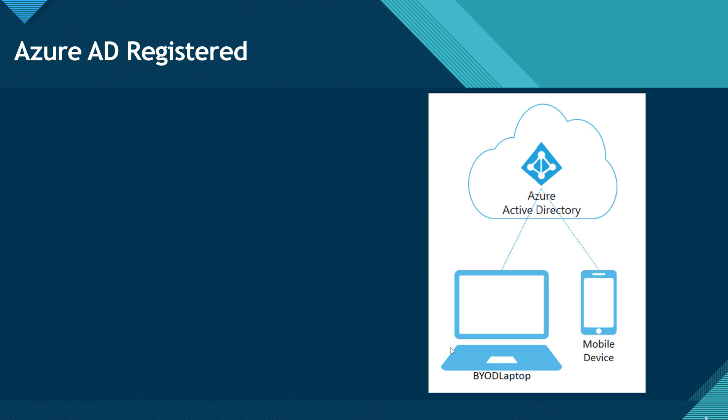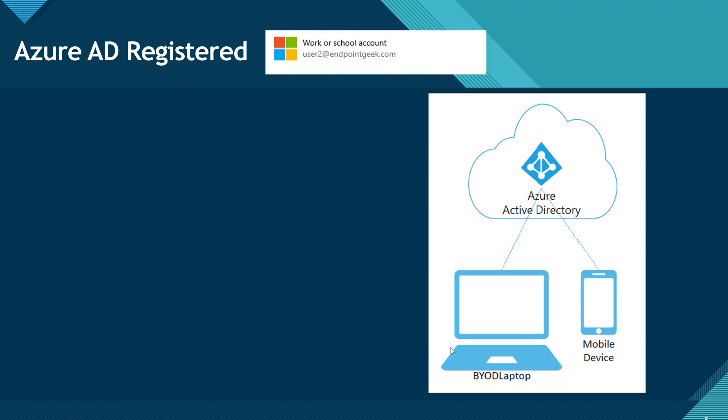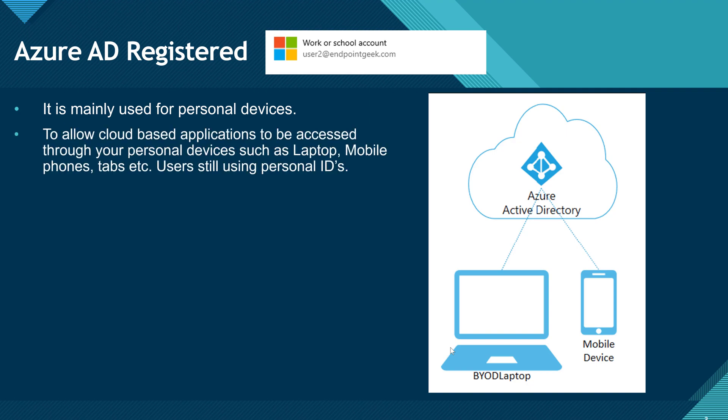For a Windows device, if you want to check whether your device is Azure AD Registered, go to Start > Settings > Work or School Account. If you see the Windows logo, it means your device is Azure AD Registered. Azure AD Registered is specifically meant for personal devices — devices you own — which can be a mobile phone, Windows device, or anything.